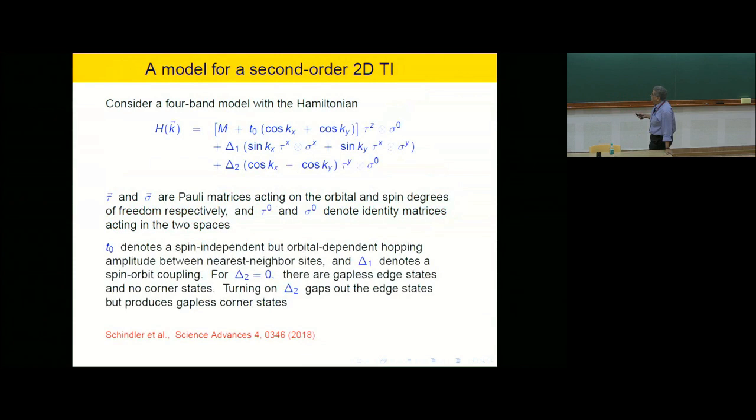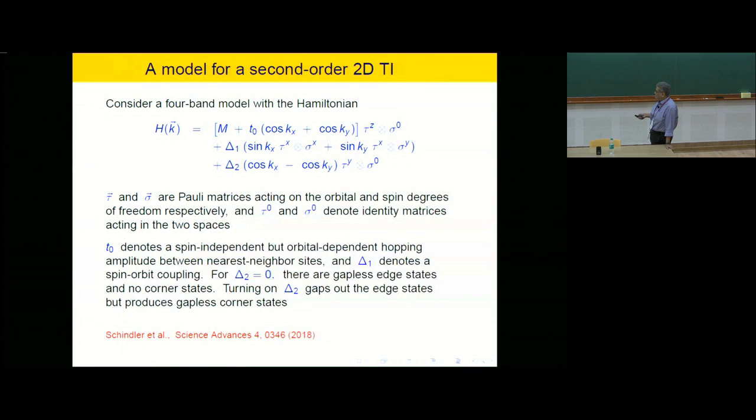Similarly, you can have a second-order three-dimensional topological insulator, where the three-dimensional bulk and all the surfaces are gapped, but the edges — the hinges — have gapless states. It is actually believed that Tin Telluride (SnTe) is an example of a second-order three-dimensional topological insulator which has gapless hinge states.